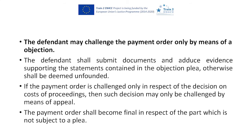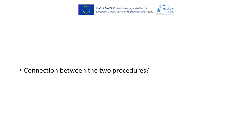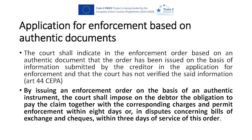Moving to the connection between the two procedures: if the debtor produces an objection against the payment order, the procedure can move to a small claims procedure if the original sum was not in excess of 2,000 euros. The last thing I'd like to address is an application for enforcement based on authentic documents — a two-part procedure which conjoins the payment order procedure with enforcement.